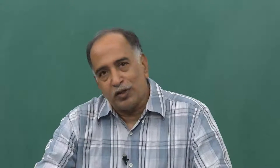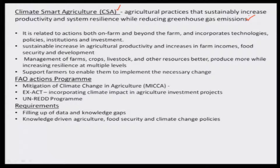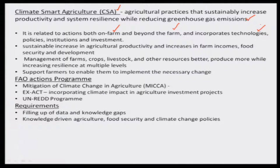What are the different constituents of climate smart agriculture? These are the actions on the farm level as well as beyond the farm level, incorporating technologies and also policies, and institutional and investment availability or non-availability.